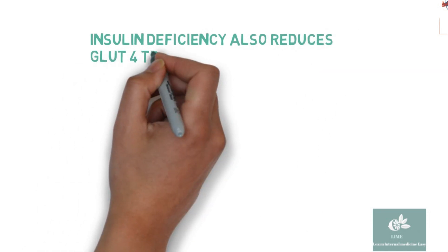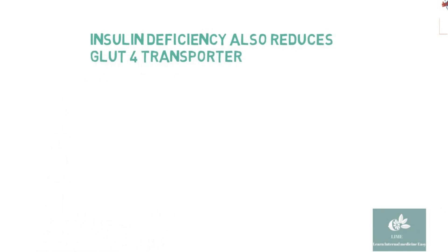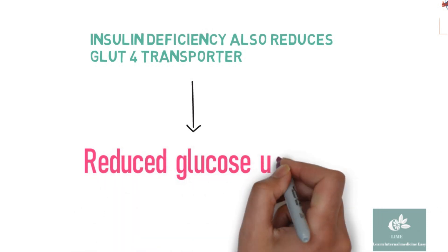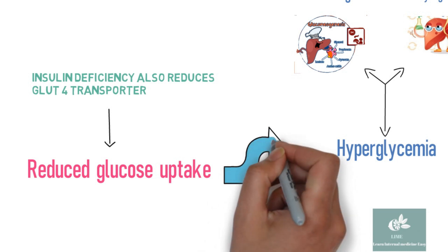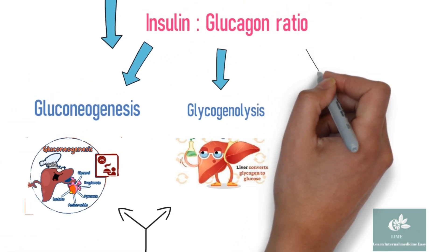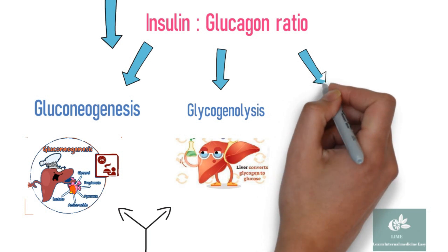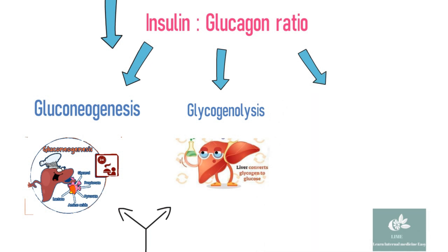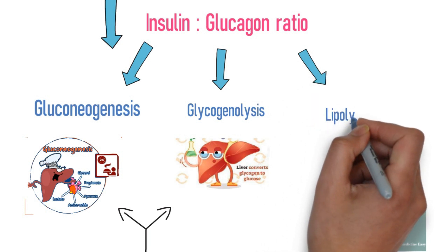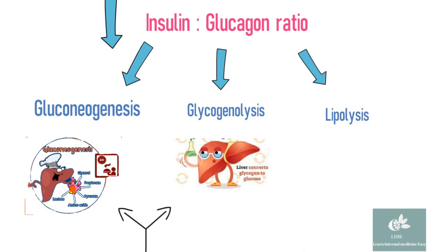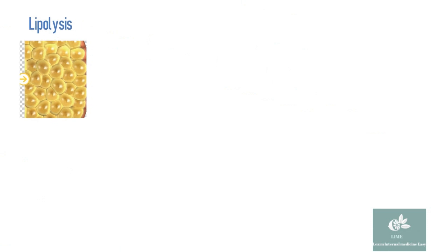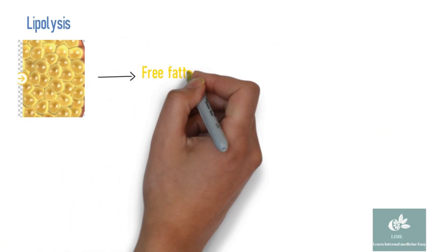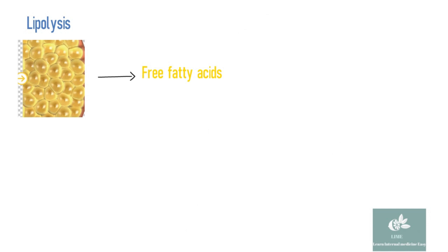Insulin deficiency also reduces the level of GLUT4 glucose transporter, which impairs glucose uptake in skeletal muscle and fat, which in turn leads to hyperglycemia. Reduced insulin level in combination with elevation in catecholamine and growth hormone increases lipolysis.